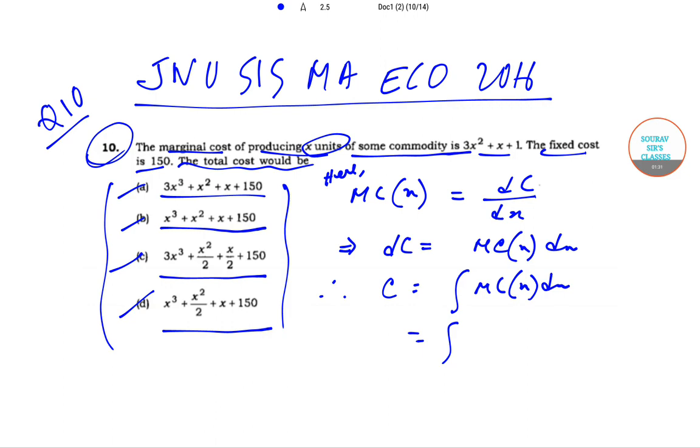Now marginal cost is given by 3x² + x + 1. So upon integration, this gives us x³ + x²/2 + x plus some constant.